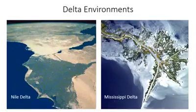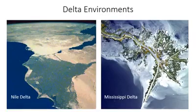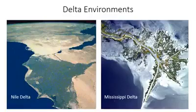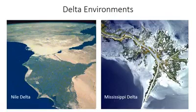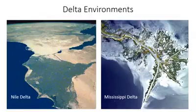Next up in our discussion of coastal clastic environments is the delta environment. Deltas are the interface between the river and coastal settings, and they're characterized typically by a mixture of fluvial, wave, and tidal processes. You've already heard about wave-dominated coastlines and tide-dominated coastlines, so some of those sedimentary structures we'll come back to and I'll mention very briefly towards the end.